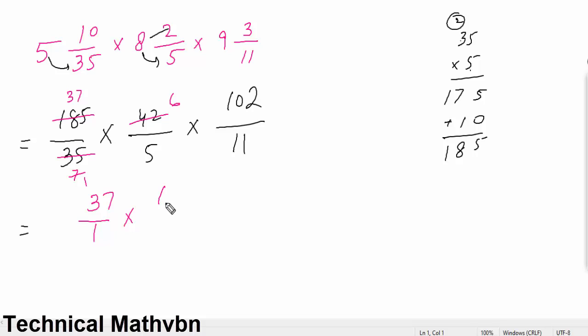Now what's left is 37 over 1 multiply 6 over 5 multiply 102 divided by 11. Now see if this cuts or not. This doesn't cut - 5 into 37 doesn't work. So now what do we do? Multiply 5 and 11, that gives 55. Now 37 multiply, 6 and multiply 102.